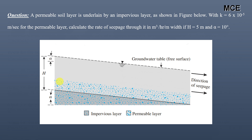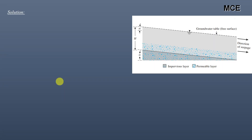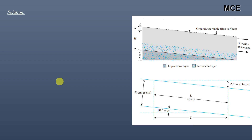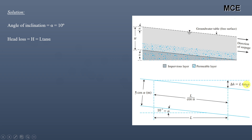First, we draw a figure for this problem. The angle of inclination is given as 10°. The length of the soil layer is denoted as L. Considering this triangle with α = 10°, the head loss — that vertical distance — is equal to L·tan(α).